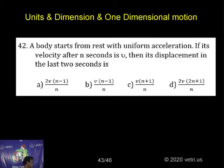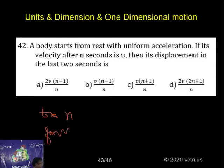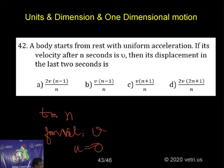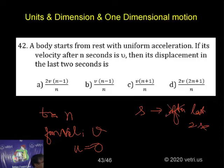For solving this, time is given as t equal to n seconds, and final velocity is given as v. Initial velocity is given as zero. We need to find the displacement s in the last two seconds.